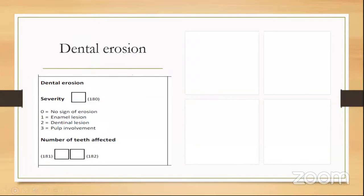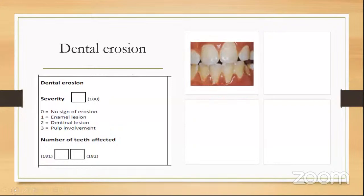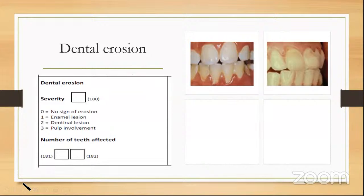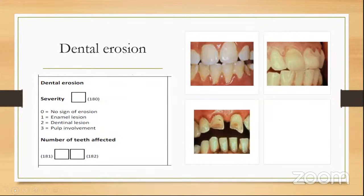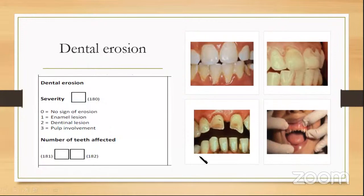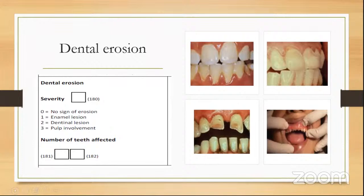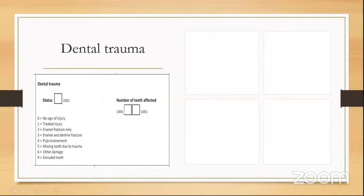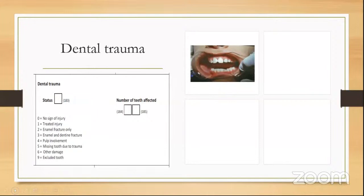Dental erosion is a new addition in 2013 not present in 1997. Score zero shows no sign of erosion; score one shows slight yellowish discoloration where underlying dentin is exposed, indicating an enamel lesion; score two shows clear dentin involvement, a dentinal lesion; score three indicates pulp involvement. The number of teeth affected is also recorded to quantify the burden in that individual.